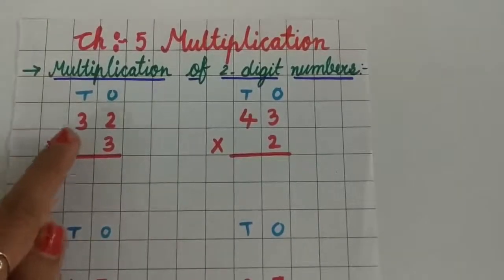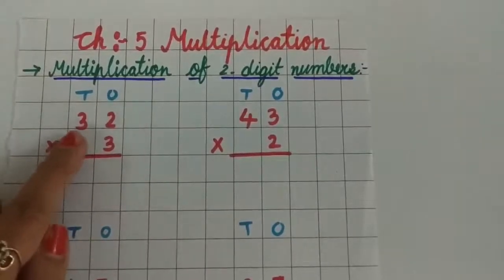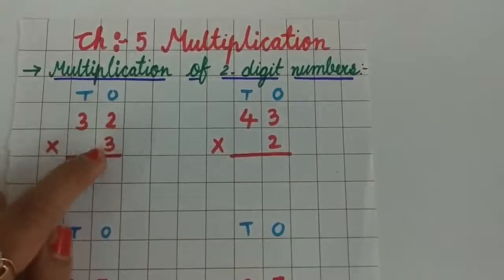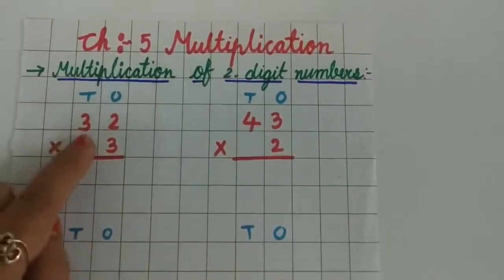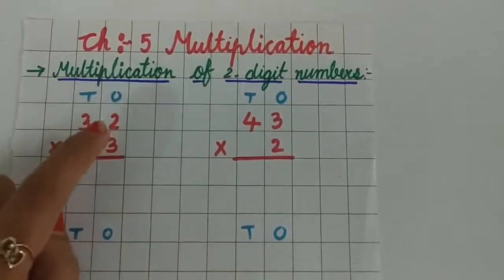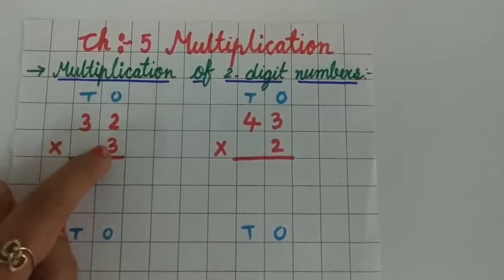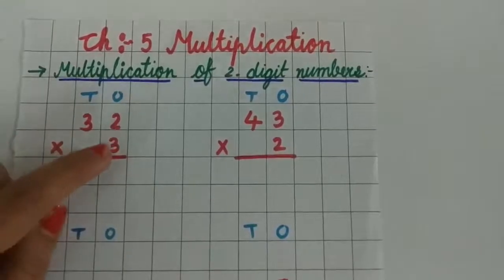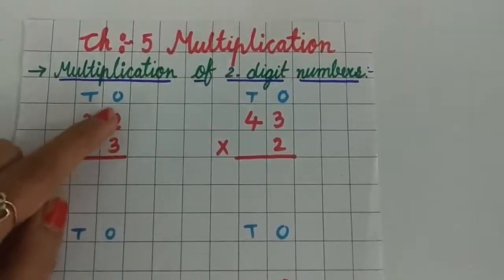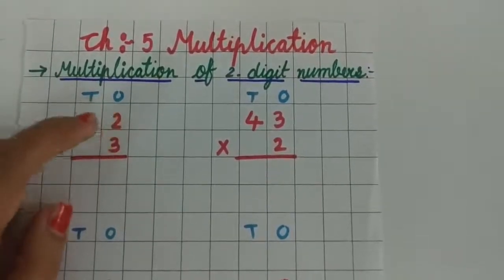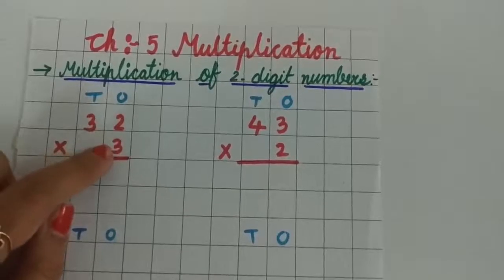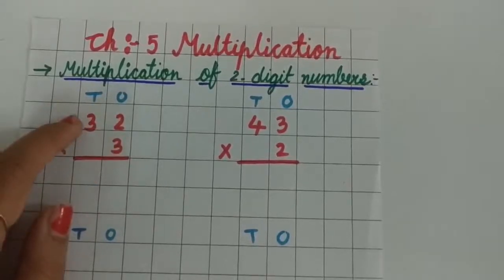First you have to arrange numbers on their places. This is the multiplicand, this is the multiplier. First you have to multiply the digit at the 1's place, then you have to multiply the digit at the 10's place.